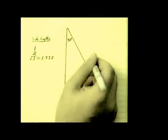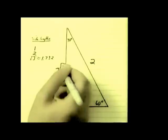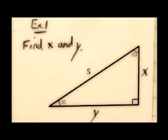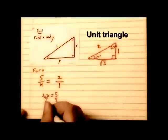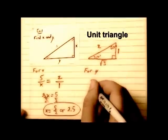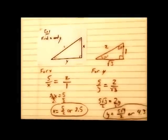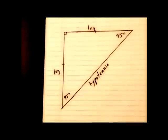And the 2 is opposite of the 90, because they're both the biggest side and angle respectively. 1, 2, root of 3.